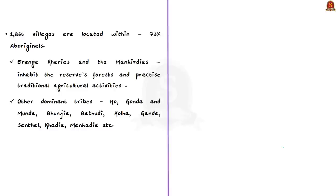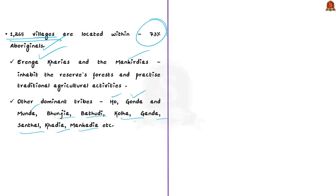The biosphere reserve consists of 1,200 villages within it and approximately 73% of all inhabitants are aboriginals. Two important tribes — the Erenga Khariyas and Mankirdiyas — inhabit the reserve forests and practice traditional agricultural activities such as collection of seeds and timber. Other dominant tribes include Ho, Gonda, and Munda. Additional tribes present are Bhoonjia, Battudi, Kola, Gunda, Santal, Kadia, and Mankadia. Not only ecologically but also culturally, this biosphere reserve is rich.